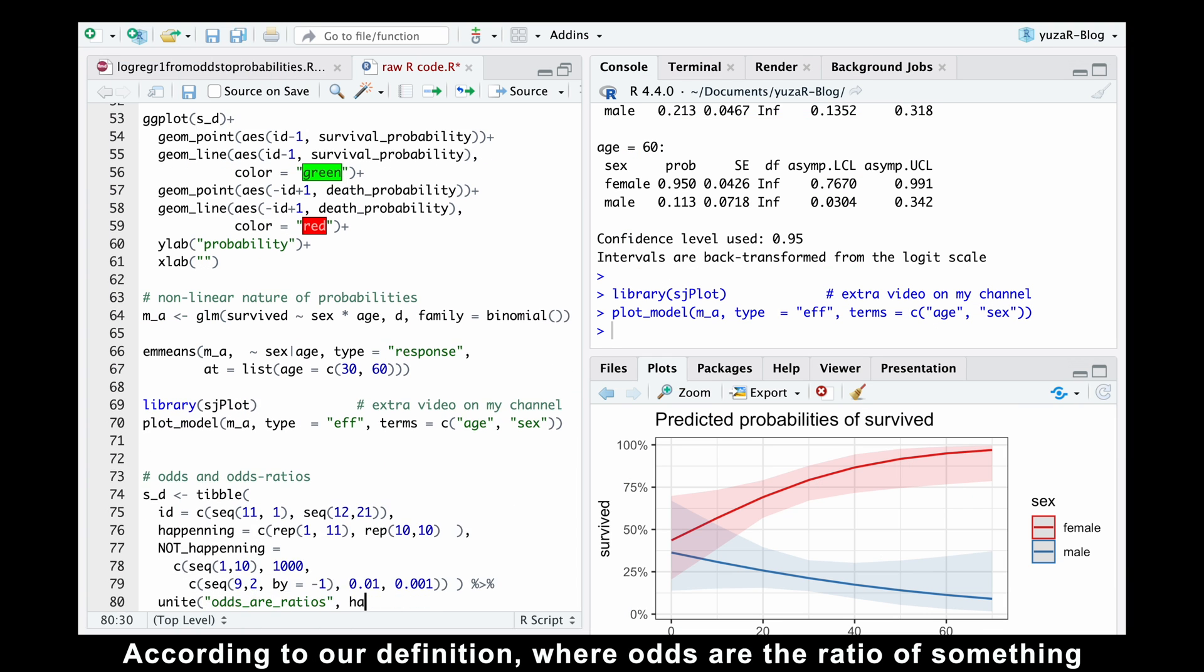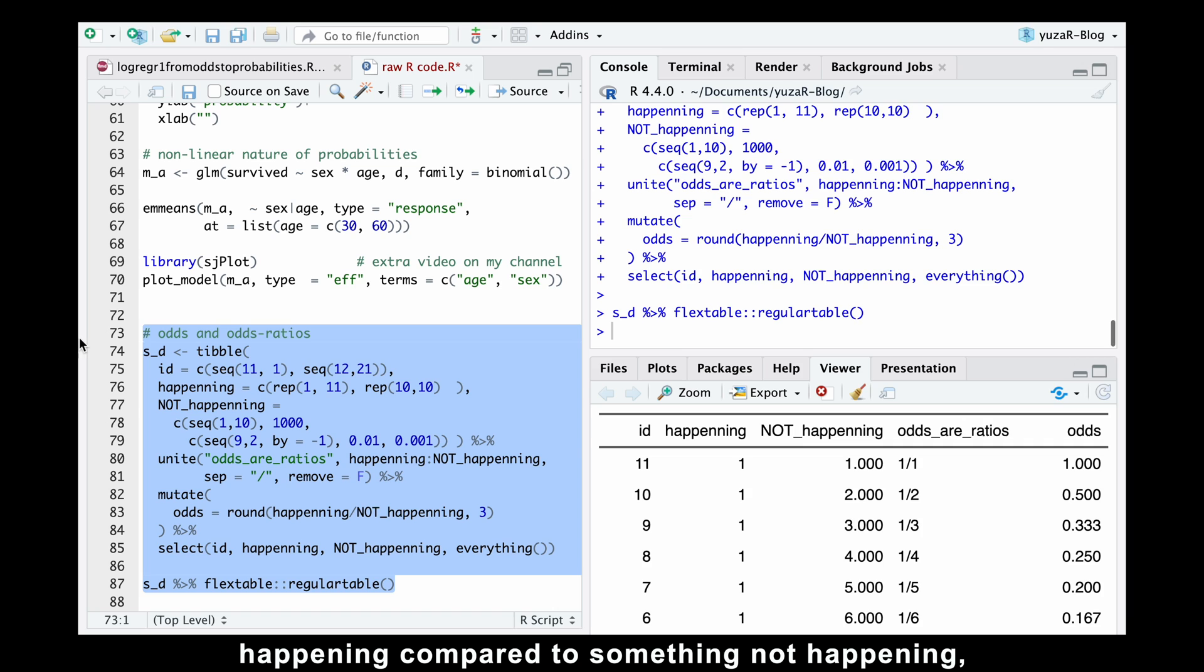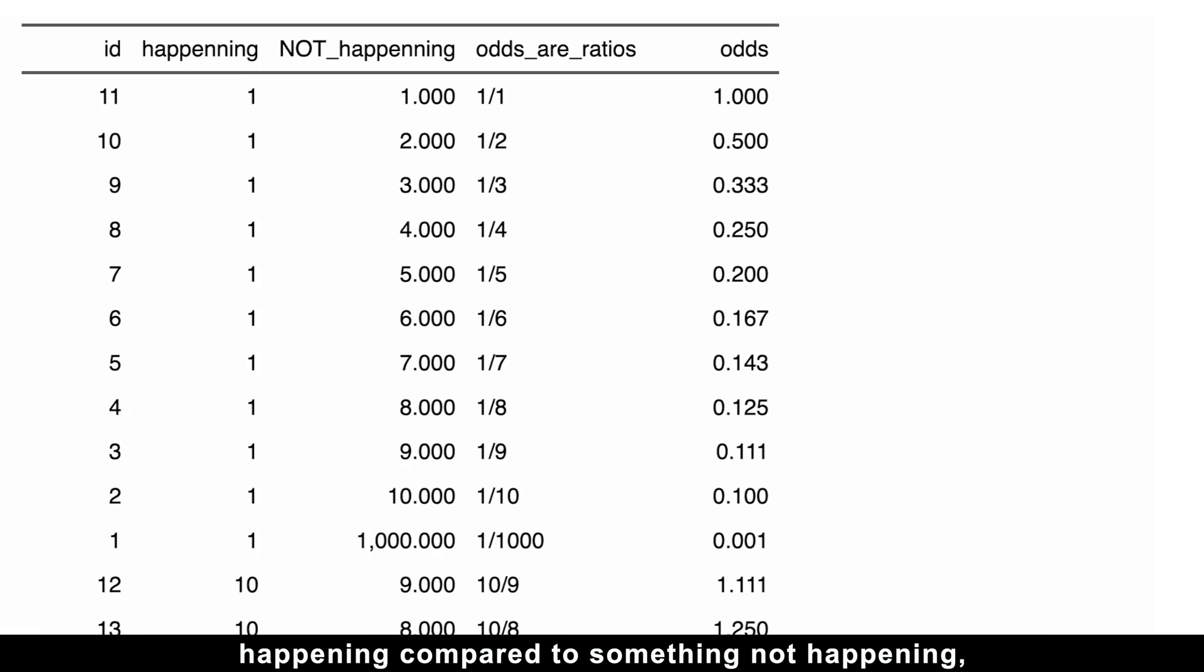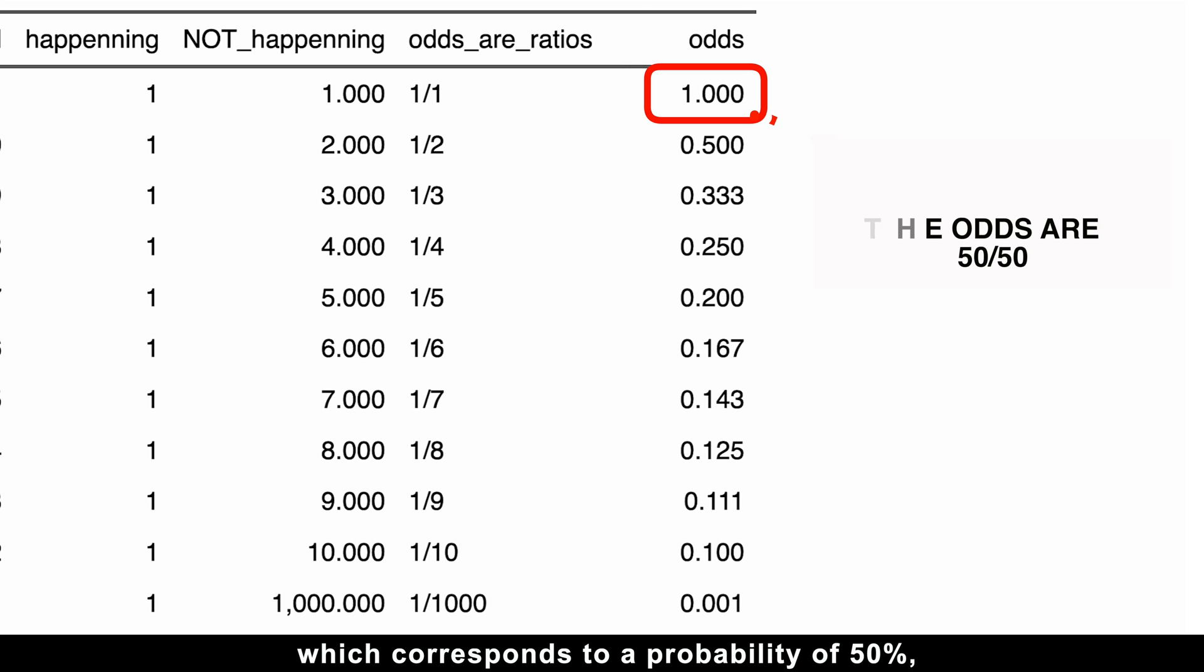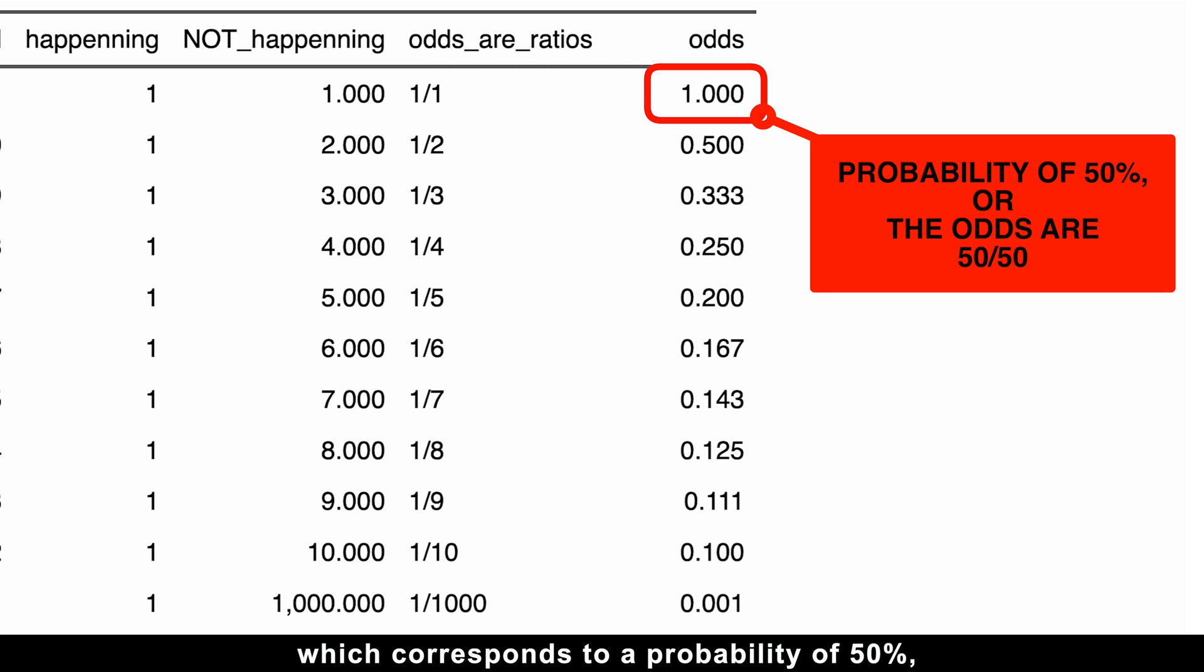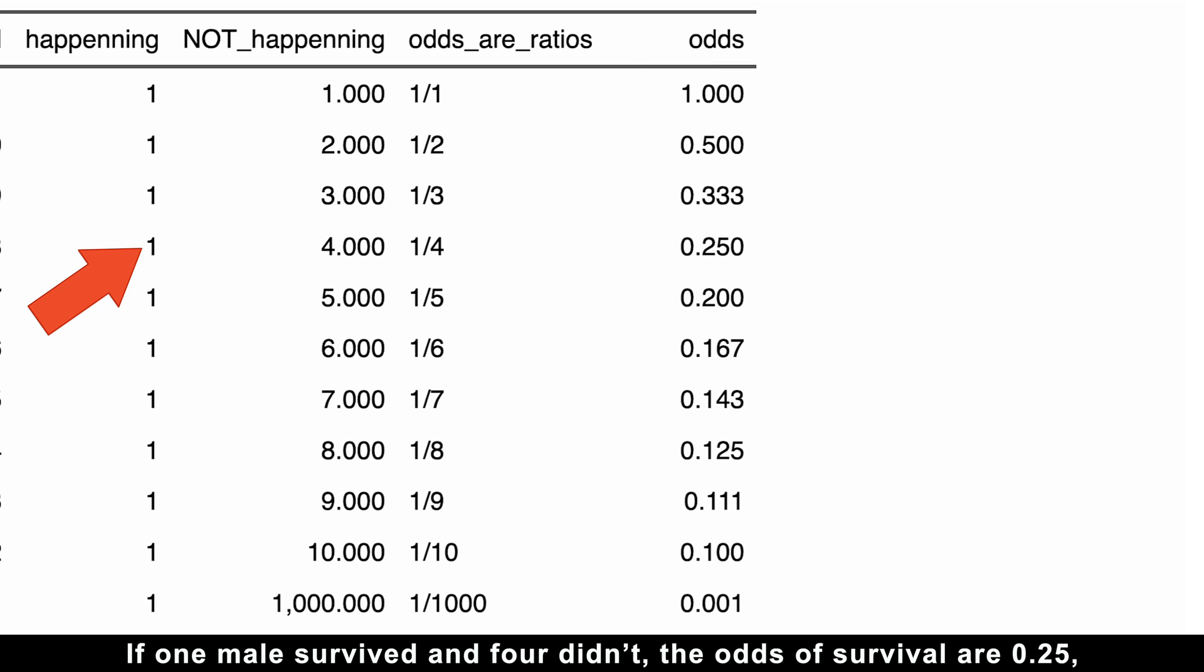According to our definition, where odds are ratios of something happening compared to something not happening, if one male survived and one didn't, the odds equals 1, which corresponds to a probability of 50%. Or as we often say, the odds are 50-50. If one male survived and four didn't, the odds of survival are 0.25, exactly what we just calculated with our model.